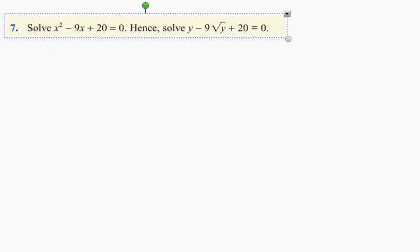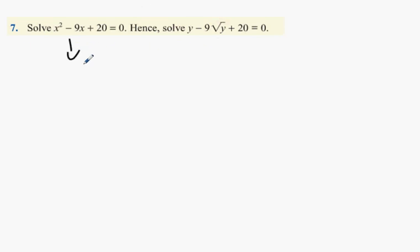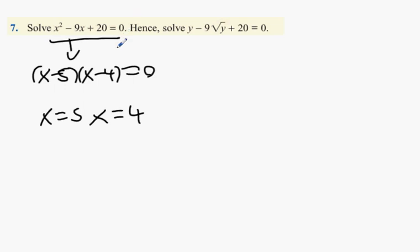This one. Solved a really easy one. x minus 5, x minus 4 equals 0. x equals 5, x equals 4. Everybody happy with that first one? Next one. Instead of x, you now have a new number. What number do you have instead of x? Y, don't you? Square root of Y.